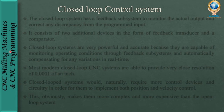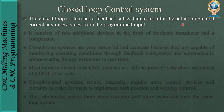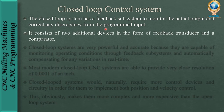Now comes the closed loop control system, which is devised based on the drawbacks of the open loop control system. The closed loop system has a feedback subsystem to monitor the actual output and correct any discrepancy from the programmed input. It consists of two additional devices compared to the open loop system: the feedback transducer and the comparator.